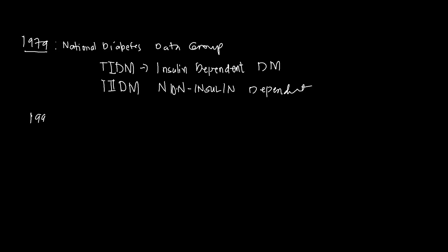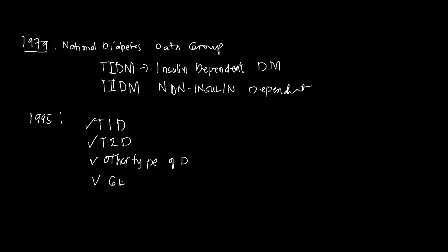In 1995, the International Expert Committee on the Diagnosis and Classification of Diabetes, through the sponsorship of the ADA — the American Diabetes Association — revised the classification. They now use Arabic numerals: Type 1 diabetes, Type 2 diabetes, other types of diabetes, and gestational diabetes.